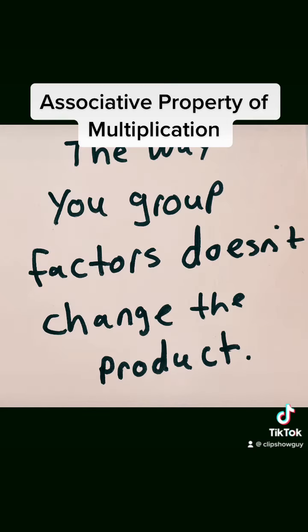So no matter which factors we grouped together or which factors we multiplied first, it didn't change the answer. We ended up with 24 either way. So the associative property says the way you group factors doesn't change the product.